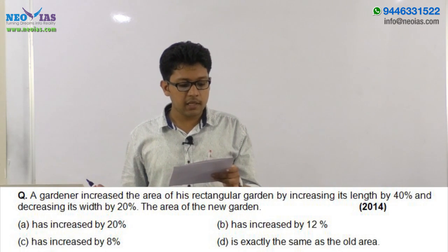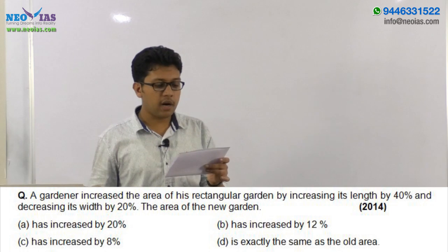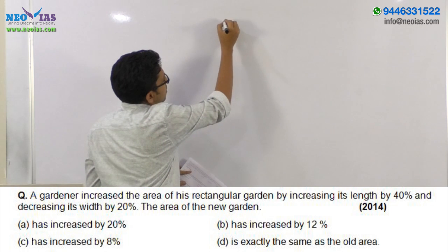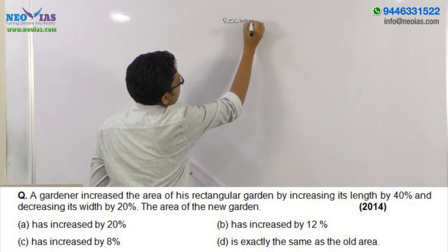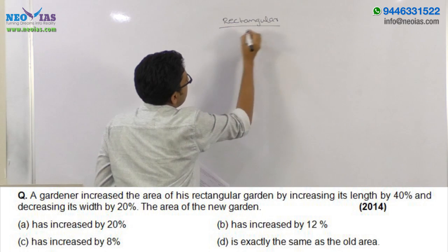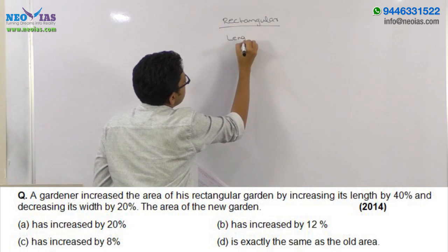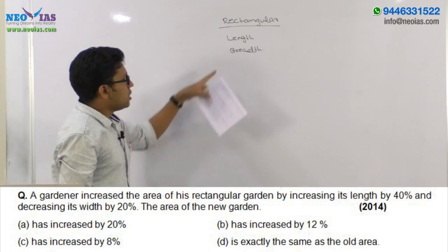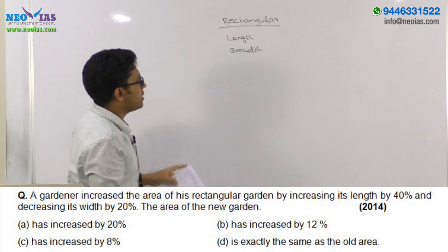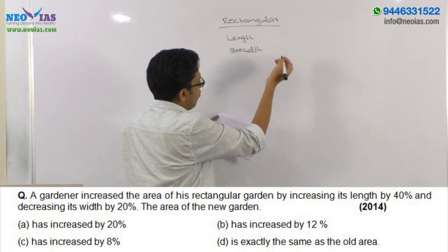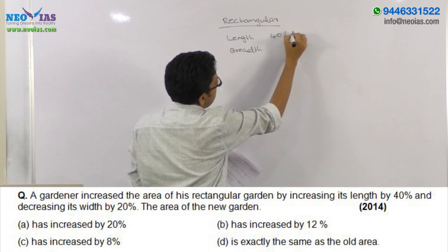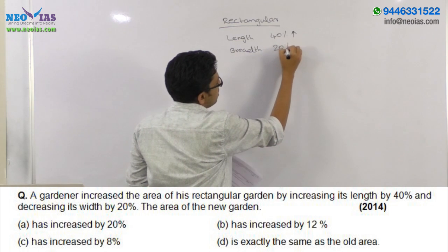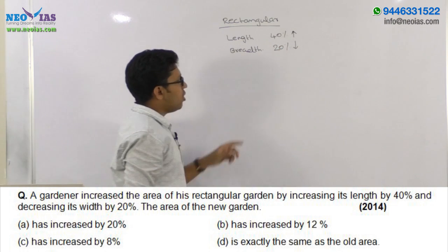Next question: a gardener increased the area of a rectangular garden by increasing its length by 40% and decreasing its width by 20%. A rectangle has one length and one breadth. The gardener applies a 40% increase in length and a 20% decrease in breadth of the garden.